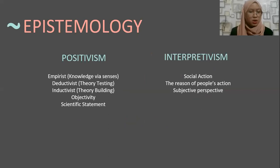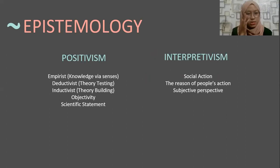The positivism view consists of empiricism — knowledge via the senses — deductive or theory testing, and inductivist or theory building, with objectivity and creating scientific statements. For the interpretivist view, it's about social action and the reasons behind people's actions. In this view, the social world is constructed by social actors.